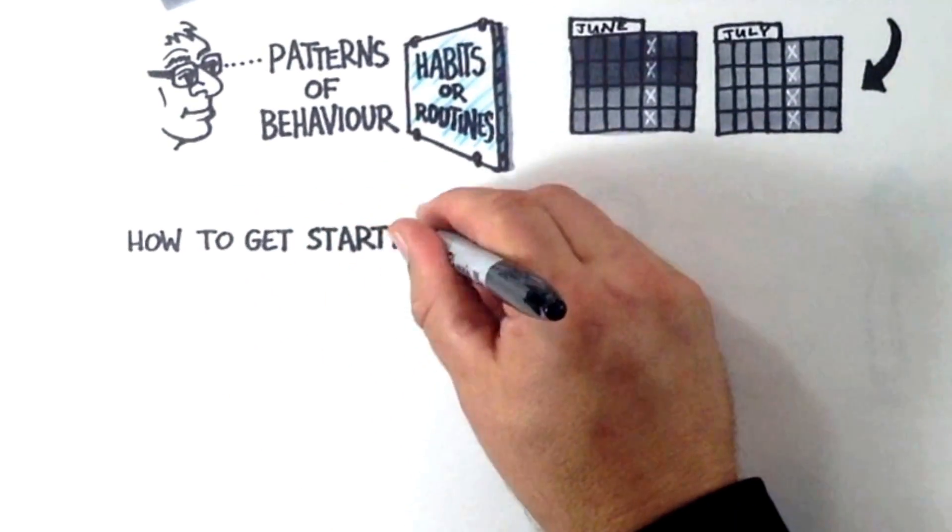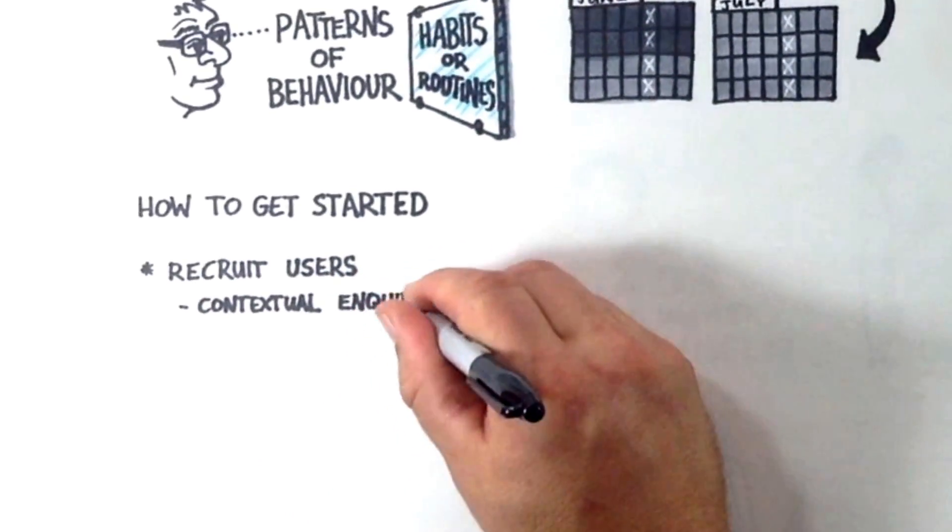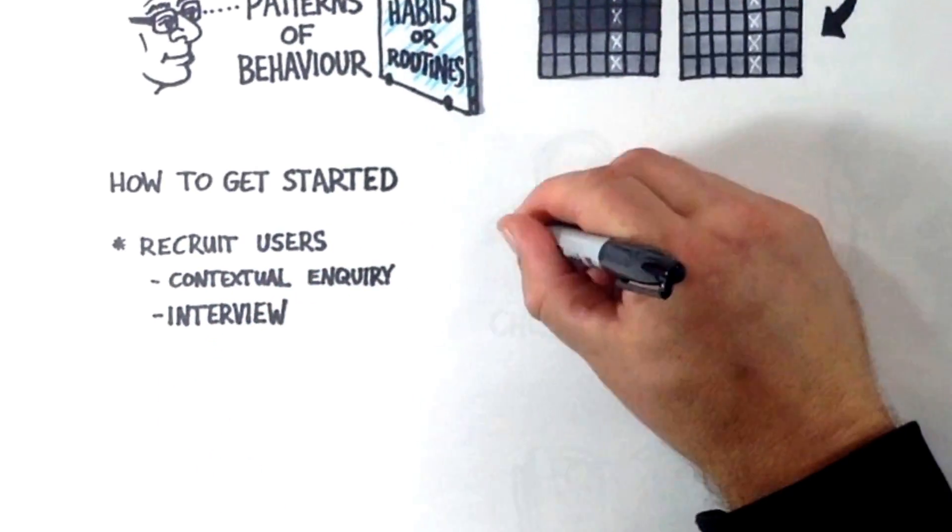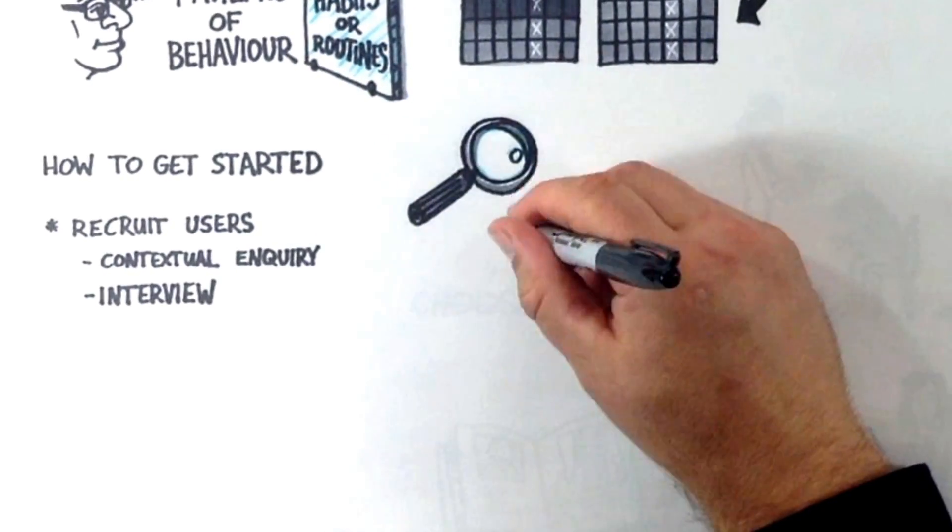So how might you get started? You firstly need to recruit your users. We tend to recruit for contextual enquiry or interview processes and then note down the people we want to learn more about over an extended period.